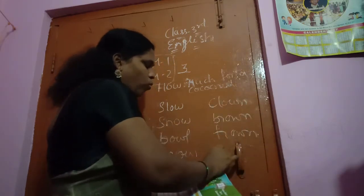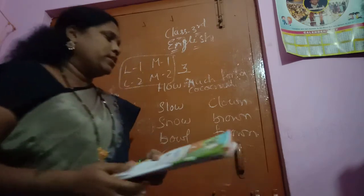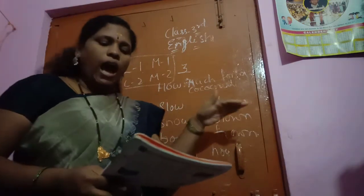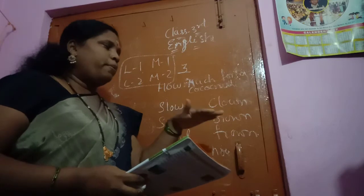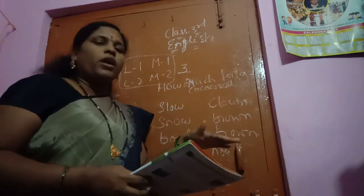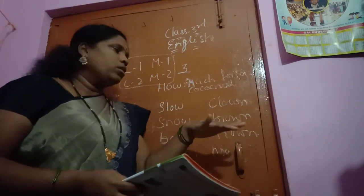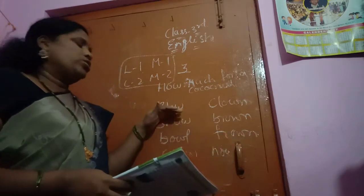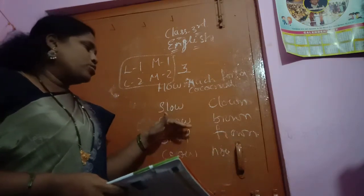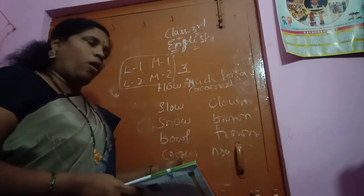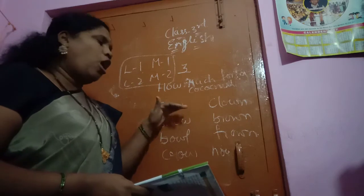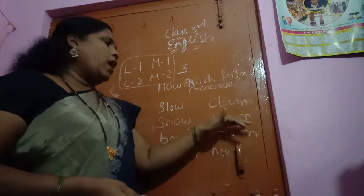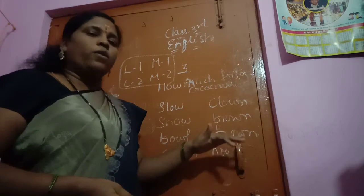Now you all can see these words: Clown, Brown, Frown, Now — and again: Clown, Brown, Frown, Now. Slow, Snow, Ball, Crow. Slow, Snow, Ball, Crow. Clown, Brown, Frown, How.